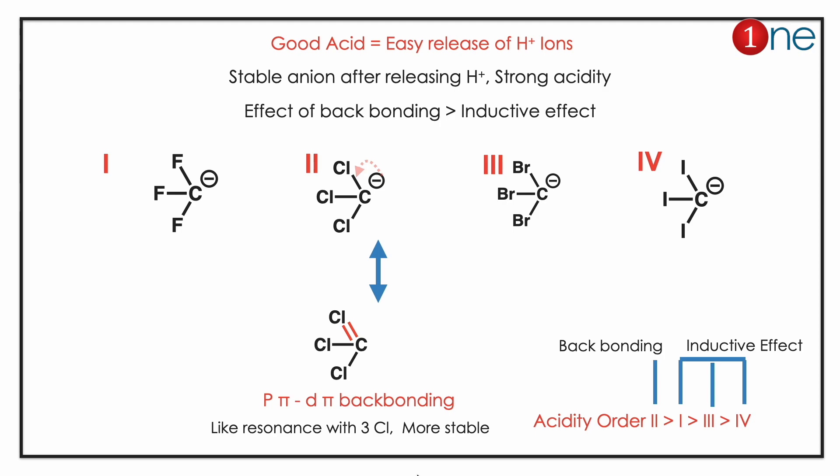Backbonding is the stronger effect when compared to the inductive effect. Chlorine has backbonding very effectively, so it acts like resonance and comes first in effect. Then comes fluorine, bromine, and iodine — they follow electronegativity order and inductive effect.